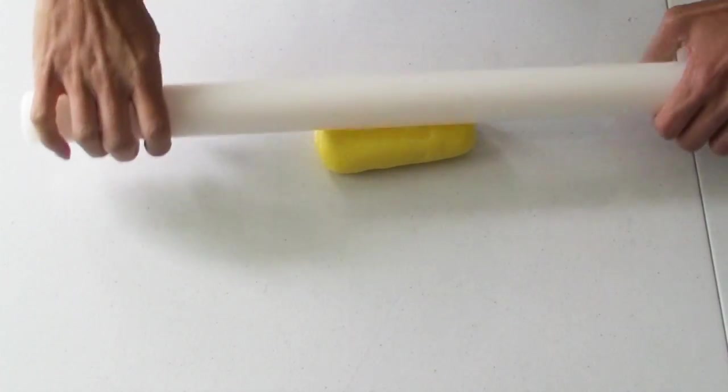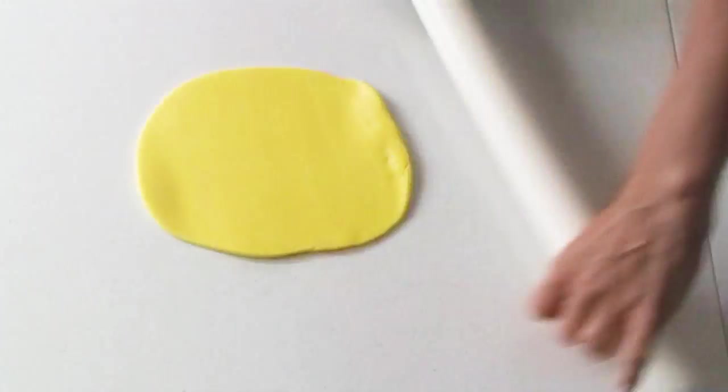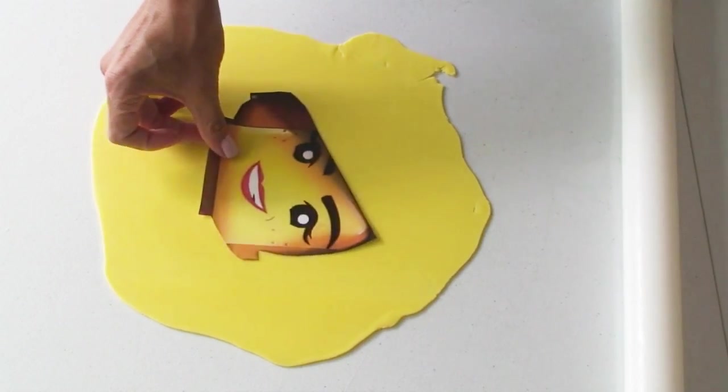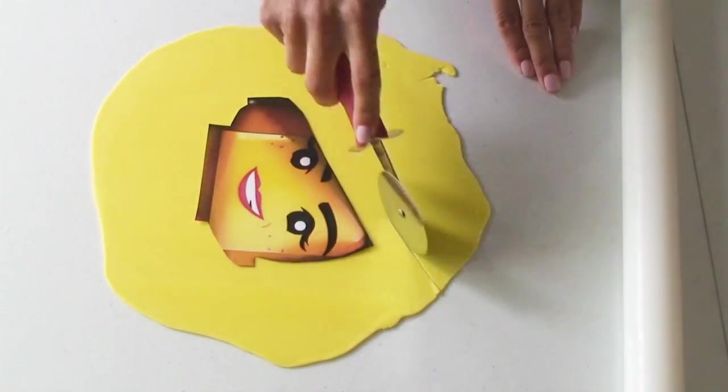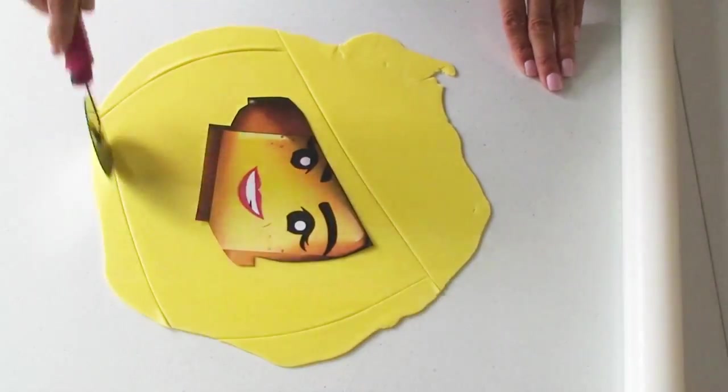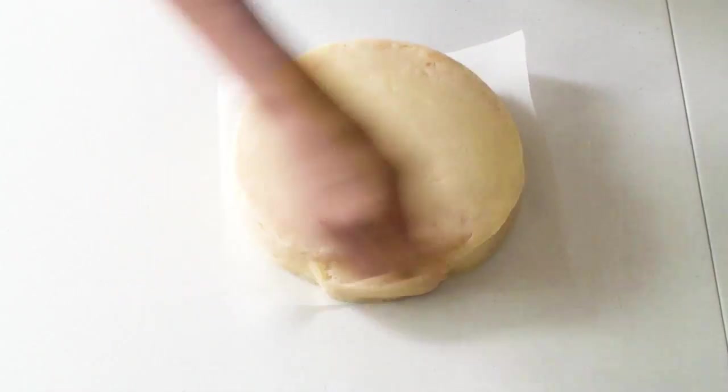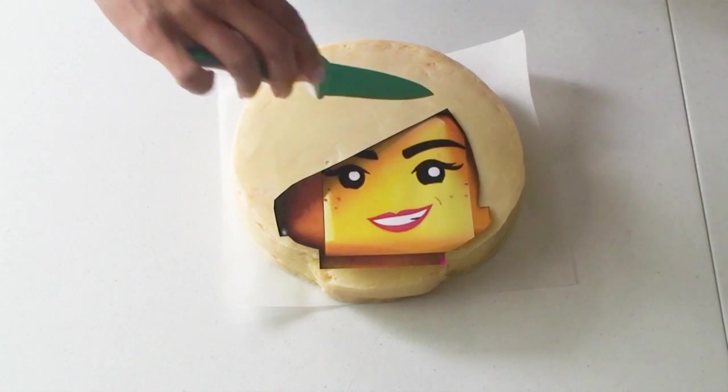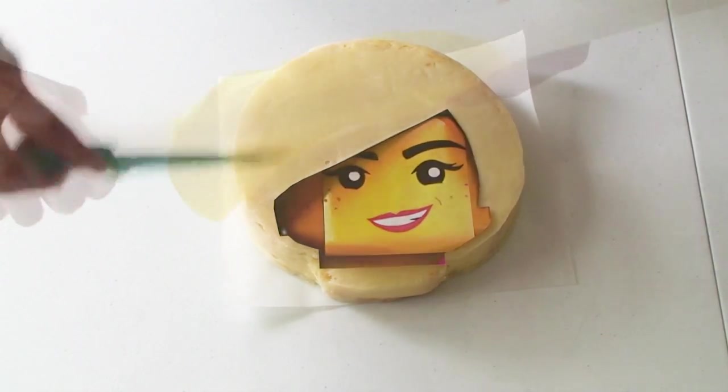Now I'm going to work on the face. Roll out yellow fondant to about one to two mils thick, then place the template on top which I've cut to separate the hair and the face. Using the pizza cutter, cut along the top and around the sides leaving enough to drape over the front side of the cake.